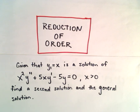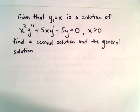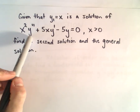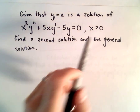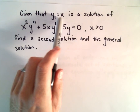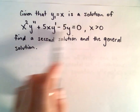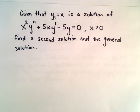In this video I'm going to do an actual concrete example using reduction of order. This is going to be a relatively basic example, just to illustrate the idea and the process. Here we've got the differential equation x squared times y double prime plus 5x times y prime minus 5y equals 0. We'll make the assumption that x is greater than 0, and we're told that y sub 1 equals x is a solution of that differential equation. We're going to use reduction of order to find both the general solution and a second solution.